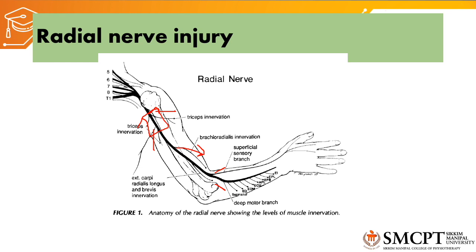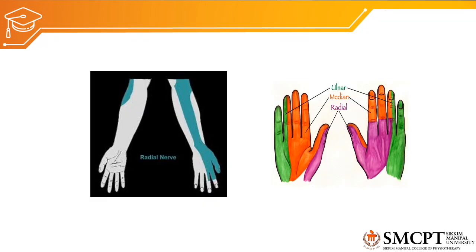At the elbow joint, the radial nerve branches into the superficial sensory branch and the deep motor branch. The superficial sensory branch supplies the posterior part of the forearm and the lateral three and a half digits until the proximal interphalangeal joint. That is the sensory supply of the radial nerve.